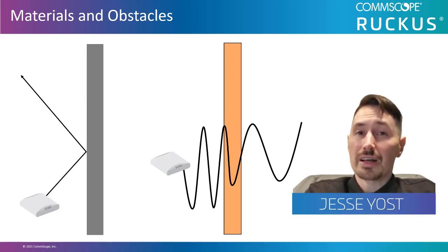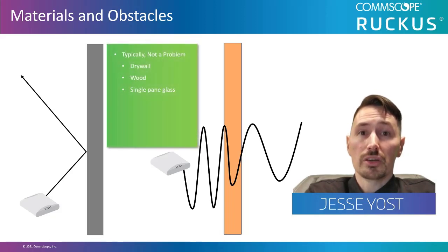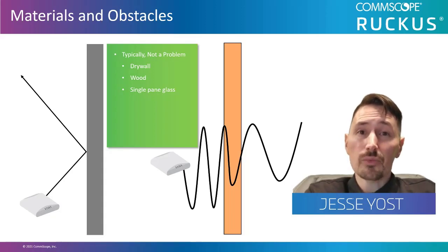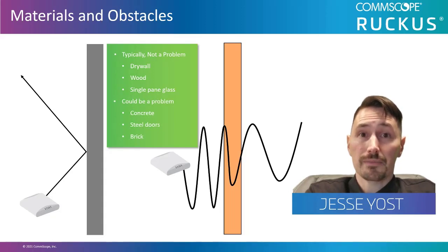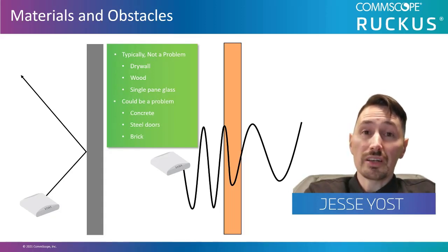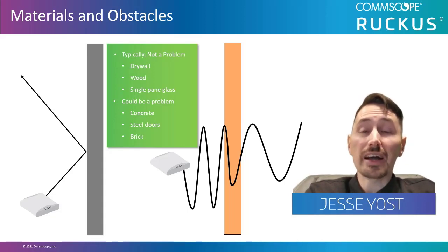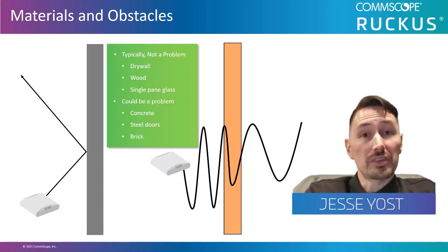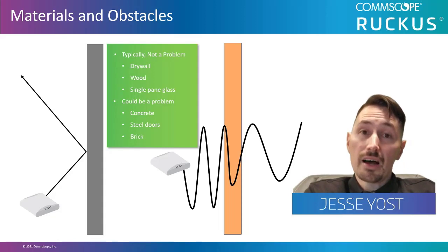Examples of materials that are not typically problematic include drywall, wood, single plane glass, trees, and even people. On the stubborn side, we have things like steel doors, concrete, and brick. That's not to say that you wouldn't get an RF signal through a brick wall, but it could impact the coverage that you're able to provide on the other side of it, as well as the speed that those clients connecting on the other side would be able to negotiate, which may not offer the client experience that you are looking for.